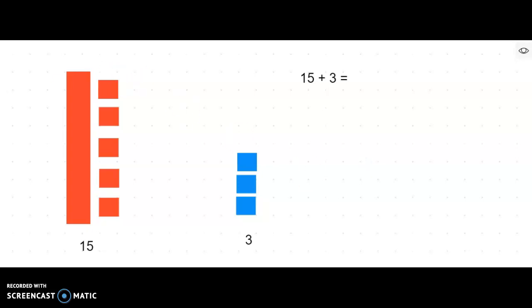So we've been practicing using a number bond to break apart the tens and ones of a two-digit number, and we're going to do the same thing here. In 15, I have one ten and five ones. So my two parts are 10 because I have one ten, and five because I have five ones.